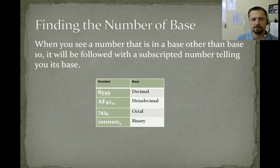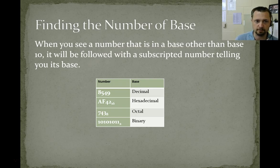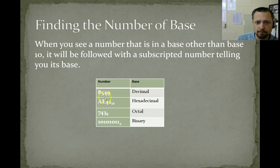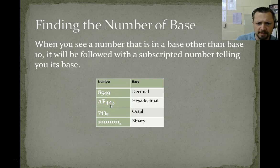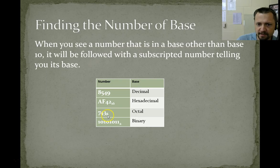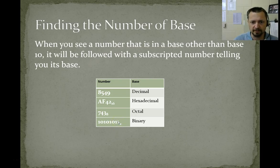Finding the number base: when you see a number that is in a base other than base 10, the decimal system, it will usually be followed by a subscript telling you the base that it's in. So if we had a number 8549, that would be decimal because they didn't list the base. AF42 looks a little weird — we'll talk about that later — but it's in base 16, or hexadecimal. 743 is an octal; that's why it has an 8 behind it. And 1010100011 is in binary — that's why it's got a base 2.